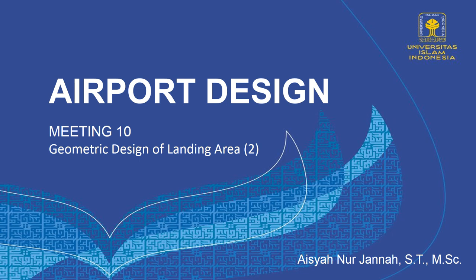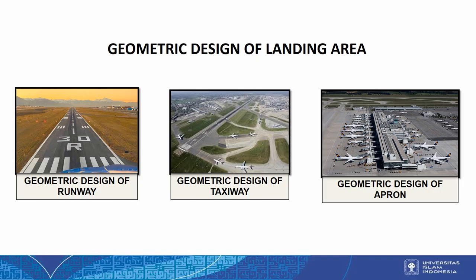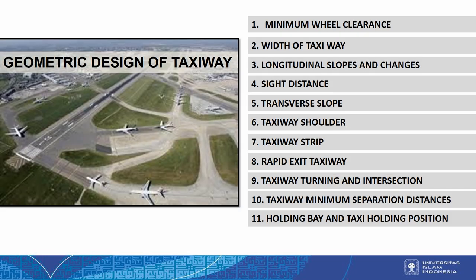Assalamualaikum warahmatullahi wabarakatuh. Today we are going to talk about the geometric design of landing area, Part 2, in our airport design class, 10th meeting. There are three parts of geometric design of landing area: the first is geometric design of runway, the second is taxiway, and the last is apron. Last meeting we already talked about runway, so today we will cover geometric design of taxiway and apron.